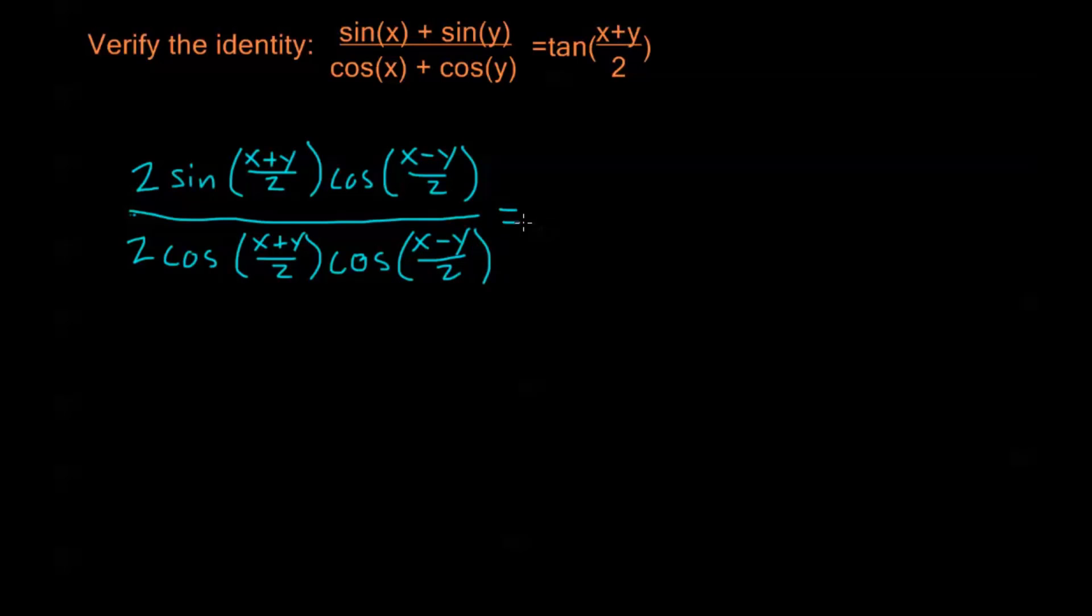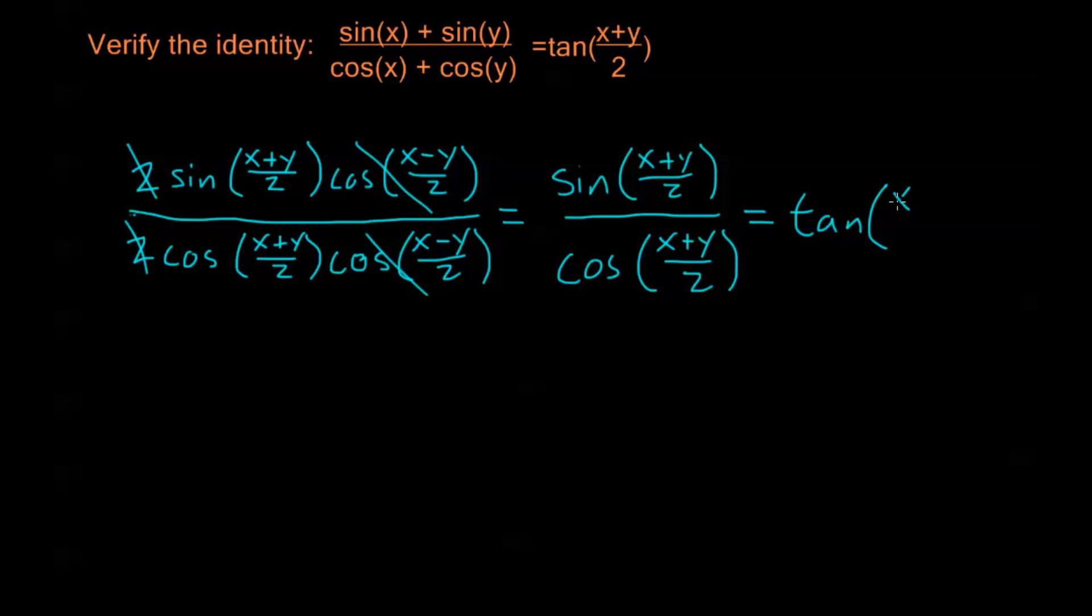All right, so this is our left-hand side. We see some cancellations right away. These 2s cancel. These cosines cancel. They're both cosine of x minus y over 2. And we're left with sine of x plus y over 2 over cosine of x plus y over 2. And of course, this is simply tangent of x plus y over 2.